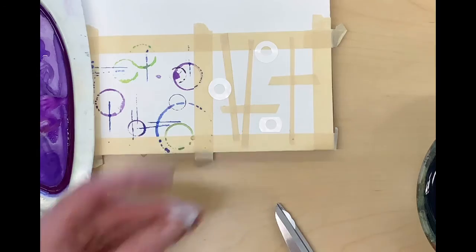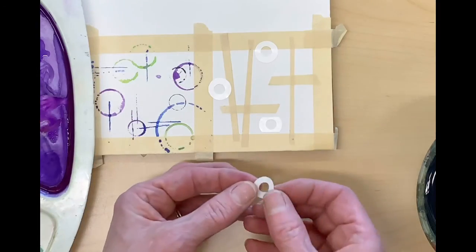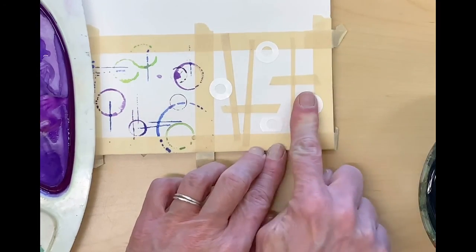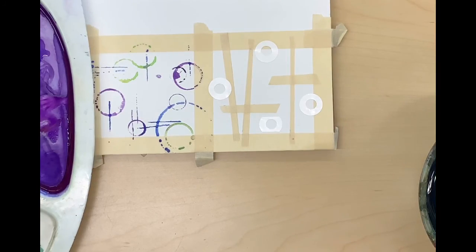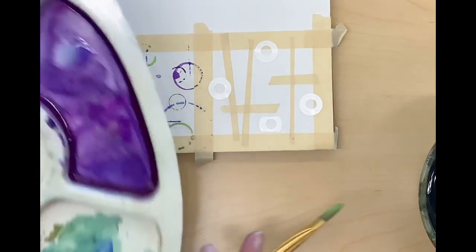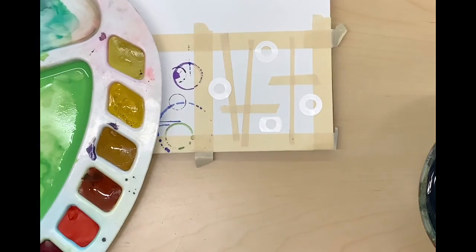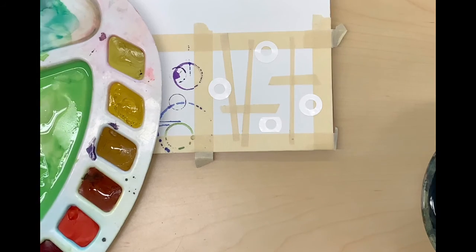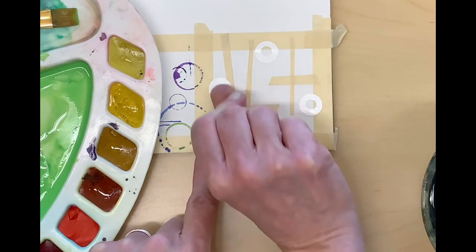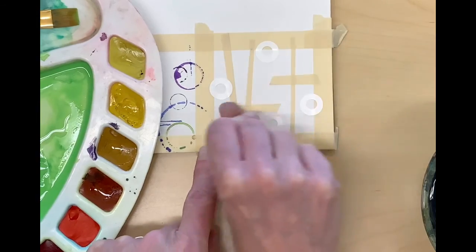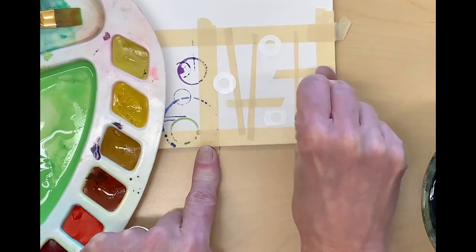Next I'm going to flood this with watercolor paint. Before you start, make sure that you take the back of your fingernail or your finger and just go back over the tape to make sure that it is sealed. You don't need to press extremely hard, but just make sure all the edges are down.